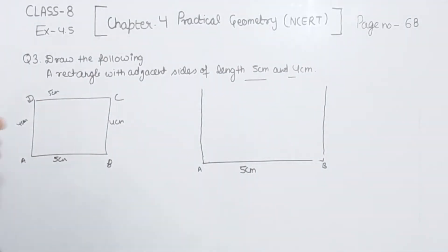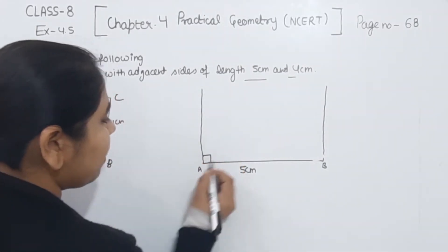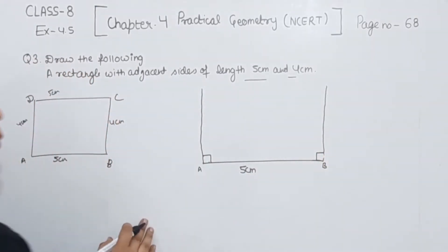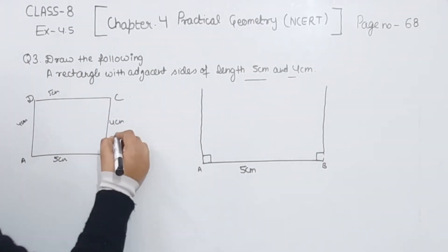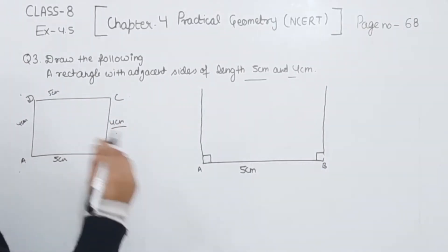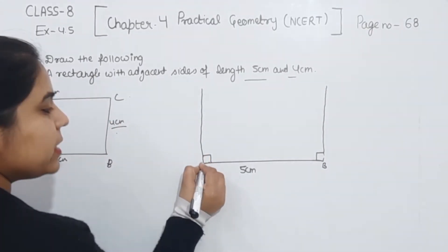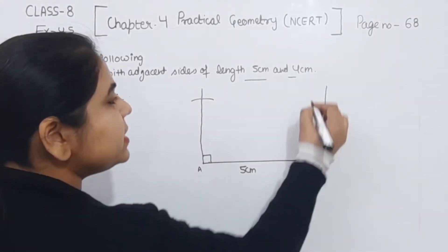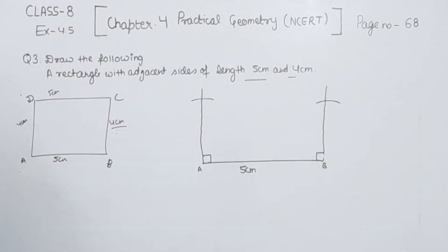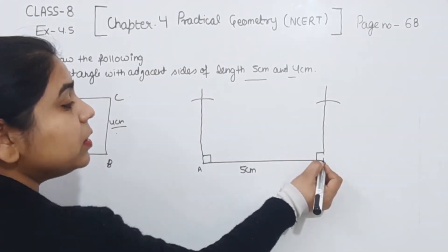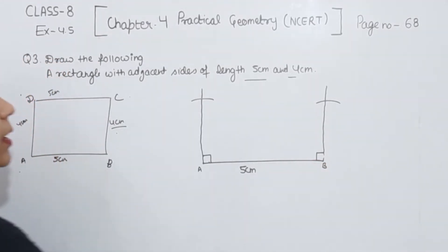Now coming back to the question. We have drawn the angle of 90 degrees at both point A and point B. Now we know that BC is equal to 4 cm and AD is also equal to 4 cm. So we are going to take a measurement of 4 cm on the compass and, with A as the center, draw an arc. Similarly, with the same measurement and B as the center, we draw one more arc on the line segment where we drew the 90-degree angle at point B.